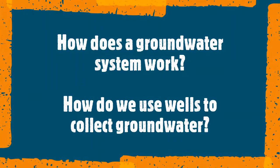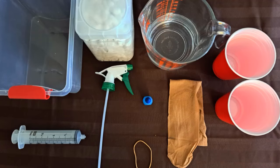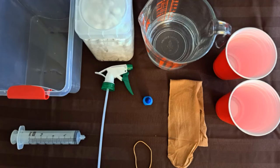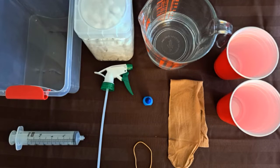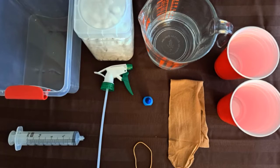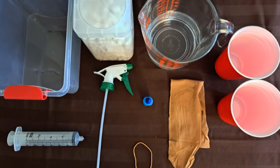This will show us how a groundwater system works and how we use wells to collect groundwater. For this activity, you will need a container with clear sides, two cups, some water, food colouring, gravel, a syringe or soap pump, a rubber band, nylon, and some tubing.